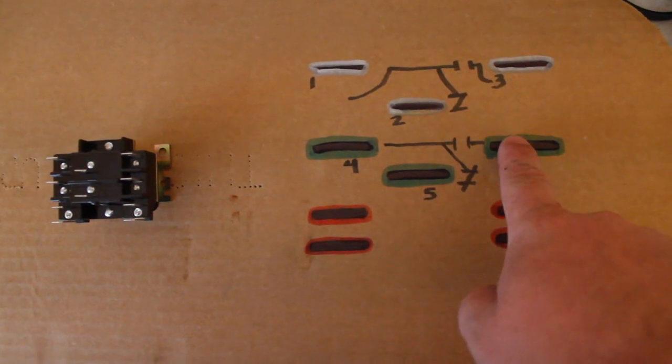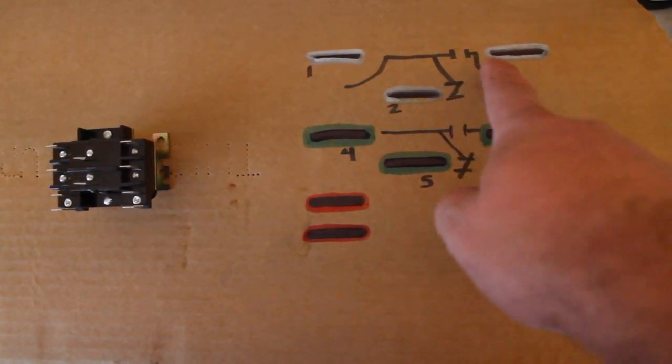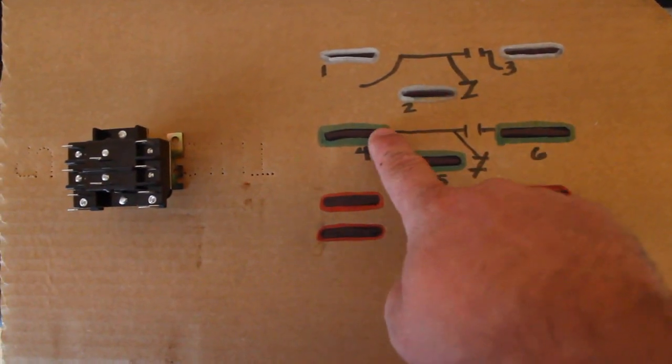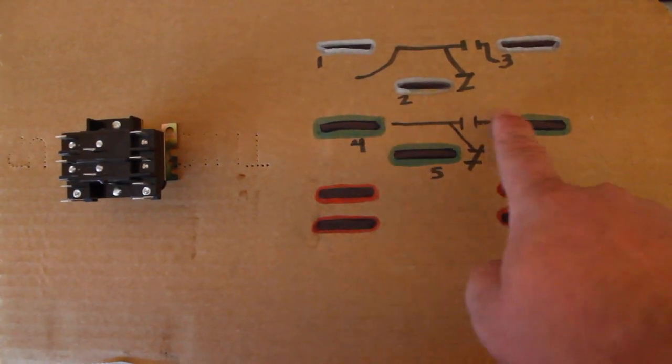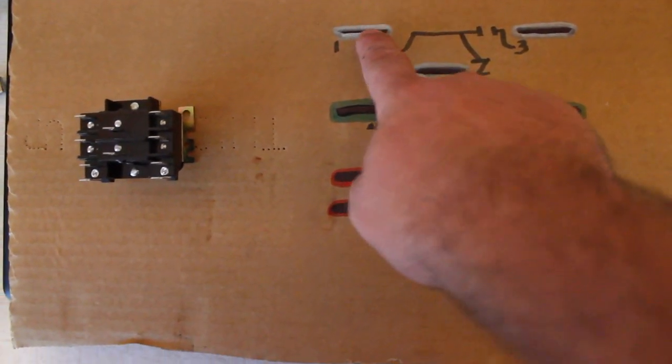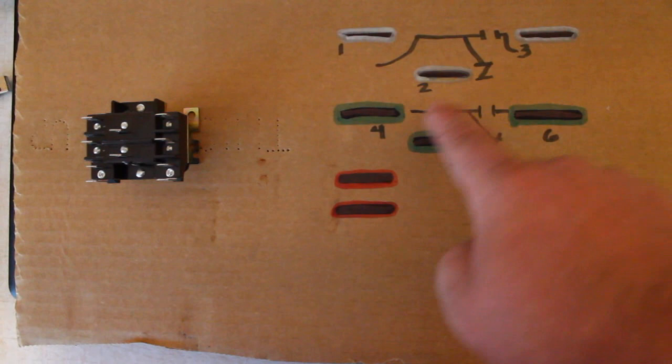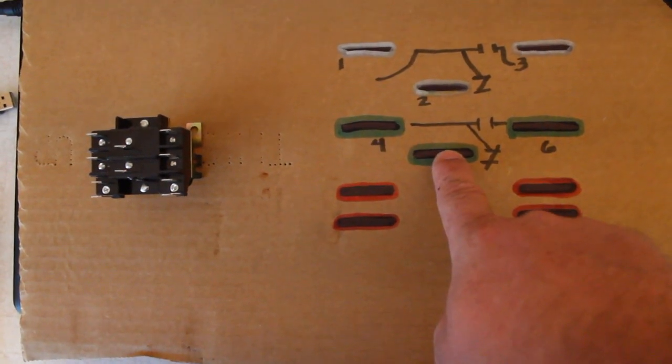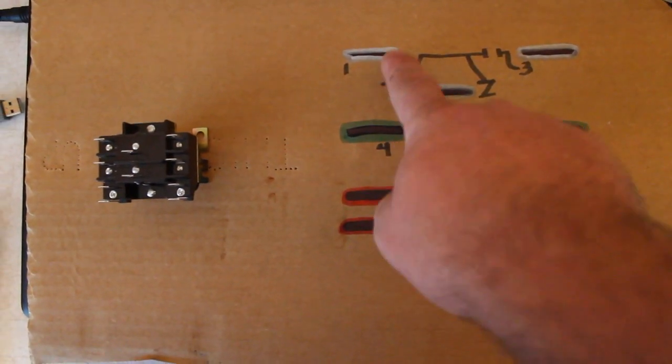If we look at four, five, and six, it is basically the same thing as one, two, and three. Normally open between four and six, just like it's normally open between one and three. Normally closed between four and five, just like it's normally closed between one and two.